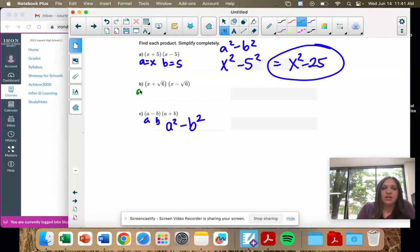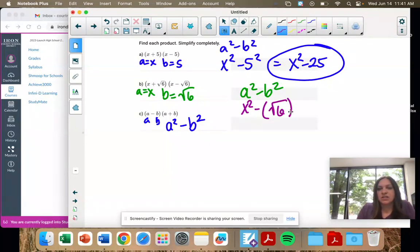Next one. A is the first term, so X. B is the second term, square root of 6. A squared minus B squared. So X squared minus square root of 6 squared.